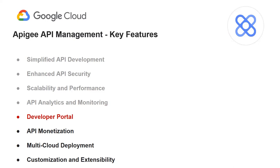Apigee includes a developer portal that allows organizations to create a customized portal for developers to access, discover, and consume APIs. This self-service platform enables developers to explore APIs, access documentation, test APIs, and manage API keys, fostering engagement and collaboration.